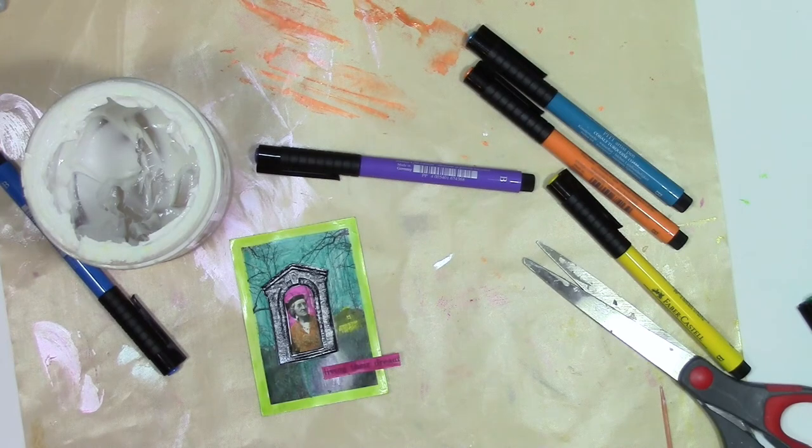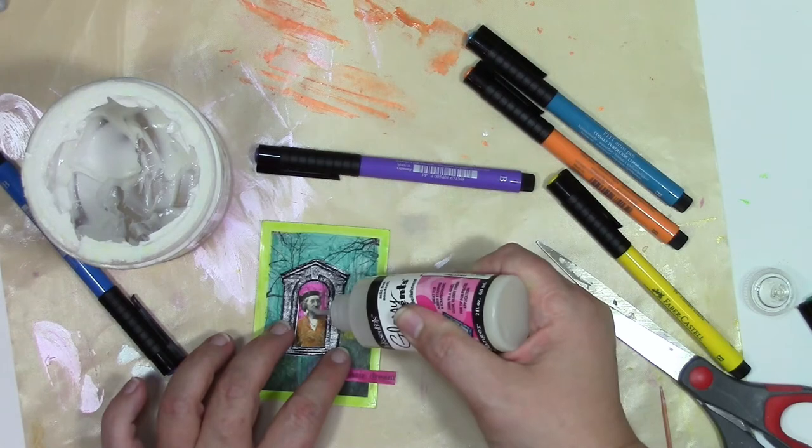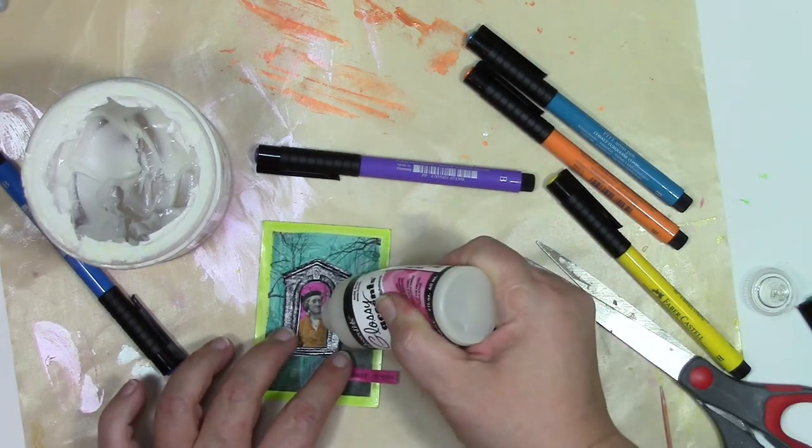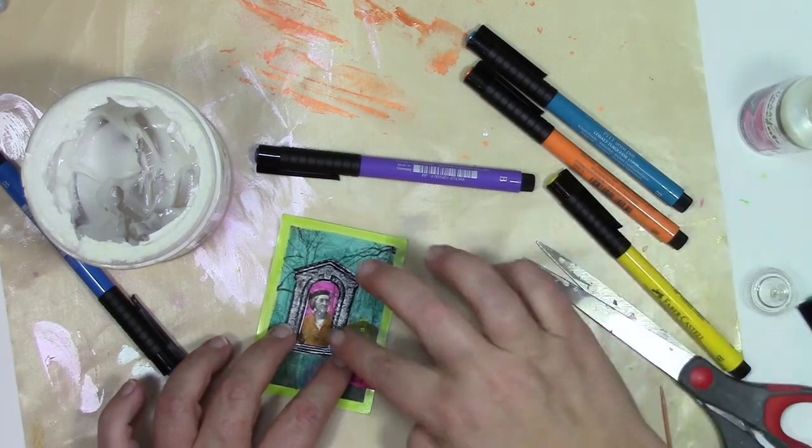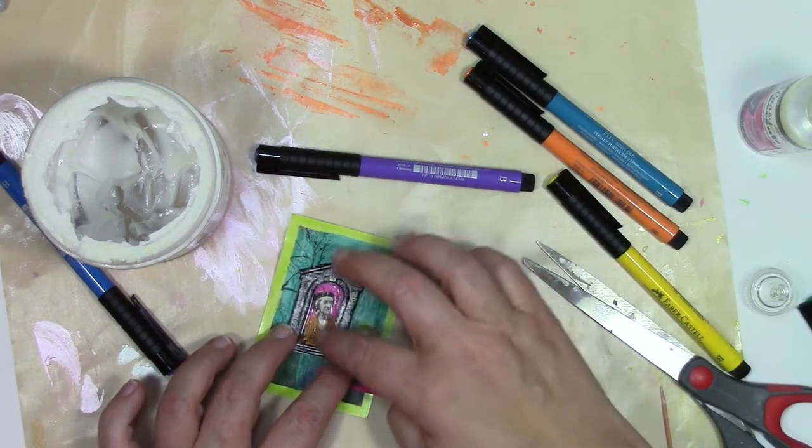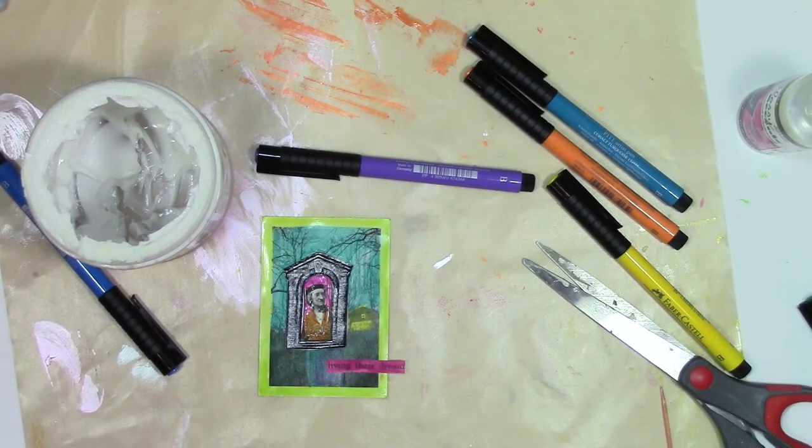The shrink film became thicker in the process of shrinking. And I'm going to use that to my advantage because it makes it act like a bezel here. So I'm going to fill her in with some glossy accents. Now I just put a little touch of it in it, just a little bit, and I'm smearing it around with my finger. I want a really super thin layer. And I'm going to let that dry completely.